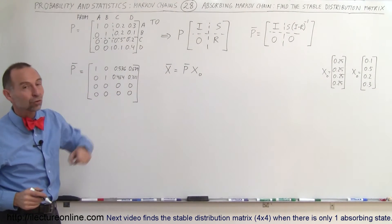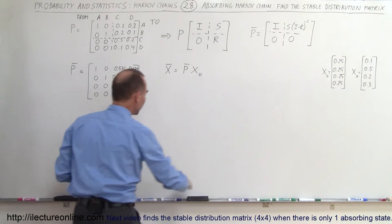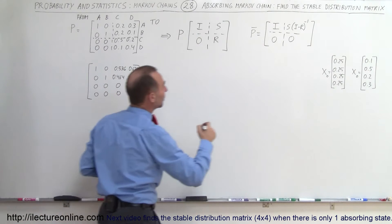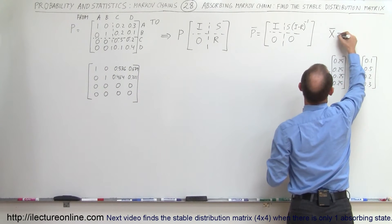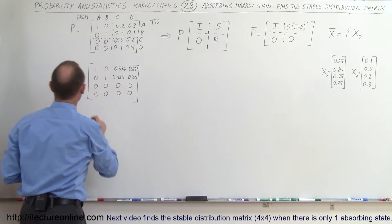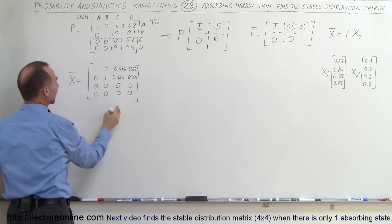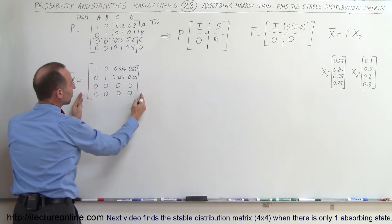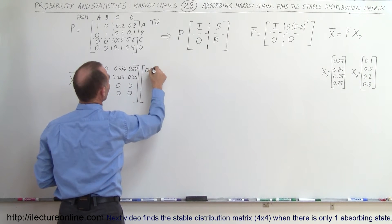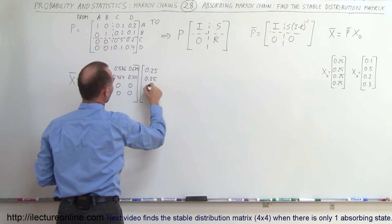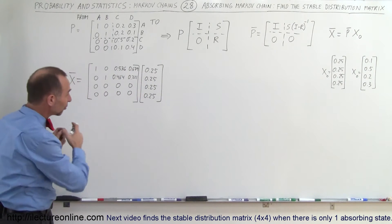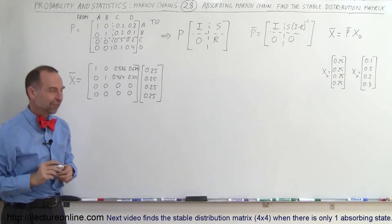Let's go ahead and try that on two particular examples. The stable distribution matrix is equal to the stable transition matrix times the initial distribution matrix. We'll start with one initial distribution, then do it again with a different initial distribution matrix and see how the final stable distribution matrix will have different values.